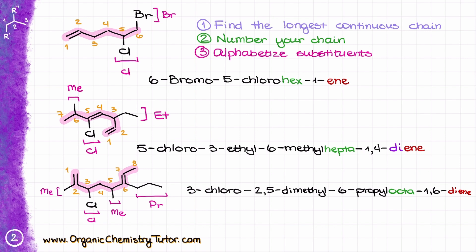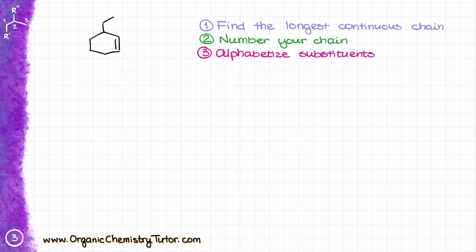These molecules were all open chain, acyclic. So how do we deal with cycloalkenes? Frankly, in a very similar way. We first find the longest continuous chain — in this case it's the longest continuous cycle containing our double bond. Here it's a six-membered ring as my parent. Next, I need to number my chain. Since cycles have neither a beginning nor an end, we number to give the lowest possible number to the alkene — so we start from the alkene.